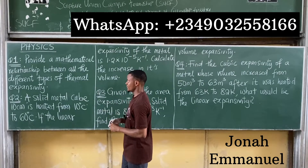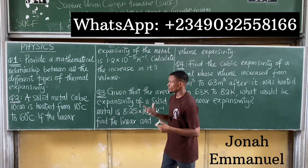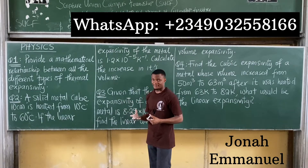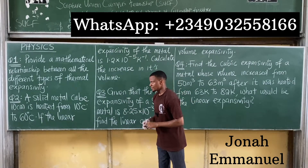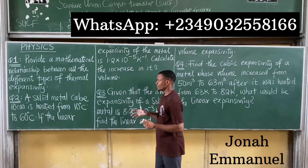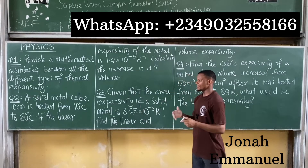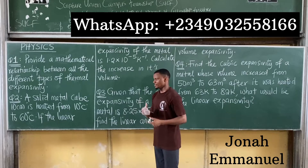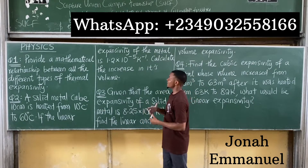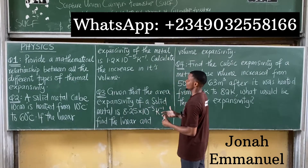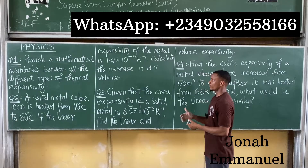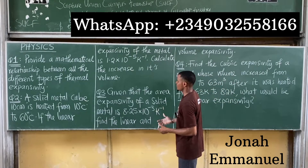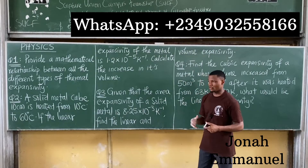The first question says: provide a mathematical relationship between the different types of linear expansivity. The second question says: a solid metal cube of 10 cm is heated from 10 degrees Celsius to 60 degrees Celsius. If the linear expansivity of the metal is 1.2 times 10 to the power minus 5 per kelvin, calculate the increase in its volume.